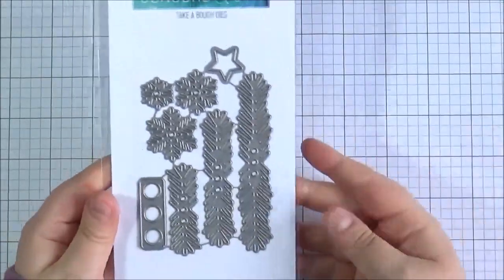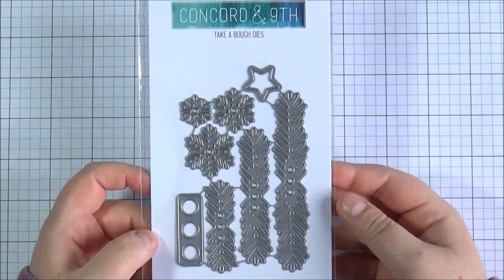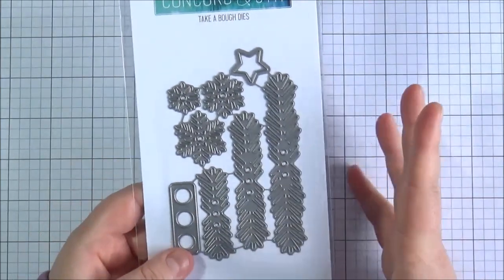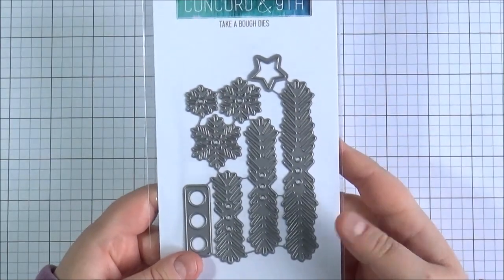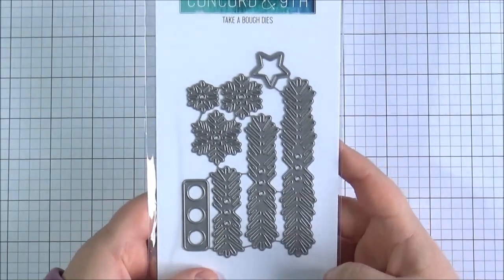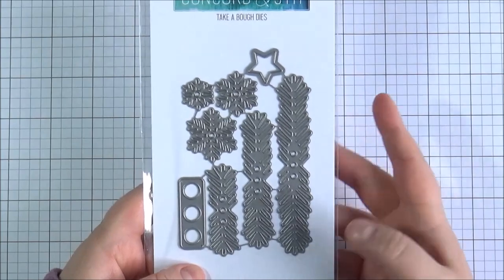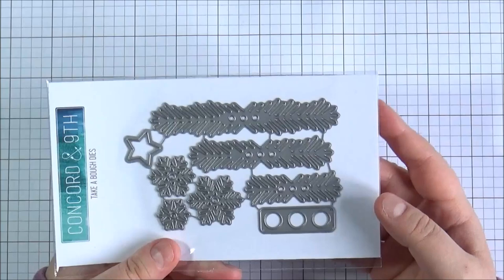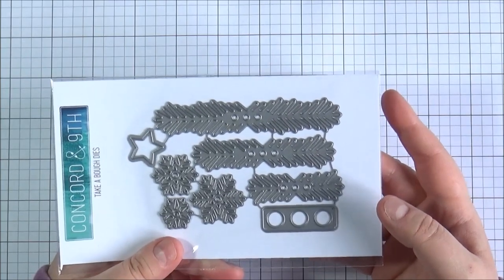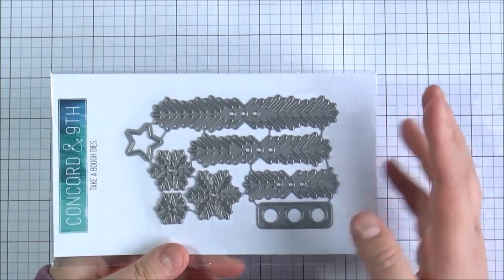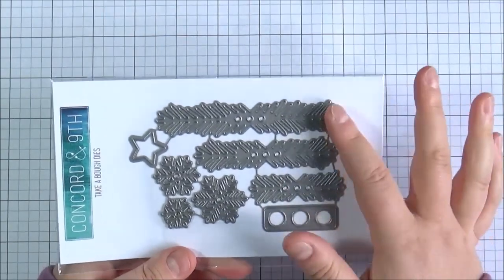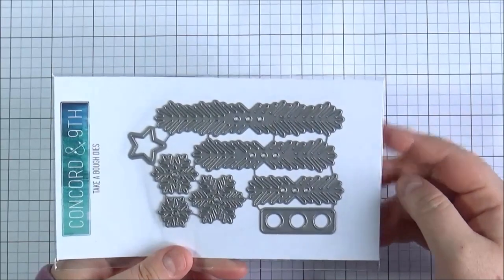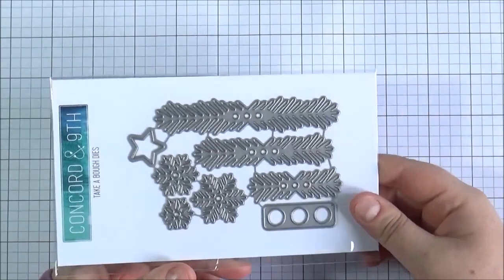And then last but not least from Make The Day Special. I went ahead and got the Concord & 9th. This is the Take A Bauble die. I've seen it on Concord & 9th. And then I wasn't sure if I was going to end up purchasing it. And then Make The Day Special got it in stock and I thought okay I will buy it. If you haven't seen it I suggest Googling Concord & 9th Christmas tree die. And basically it just makes a really lovely Christmas tree. So you can cut out all the different layers of the Christmas tree and pop them together like on a stick. And just really beautiful.